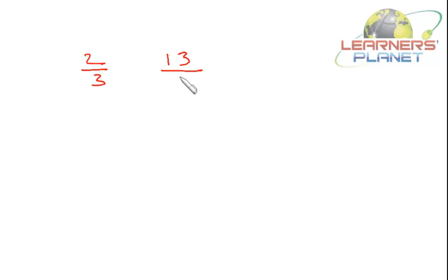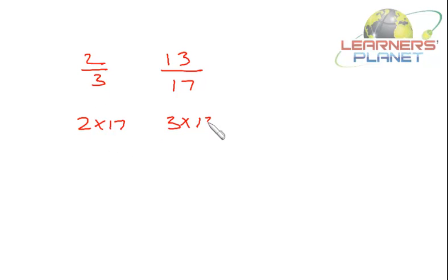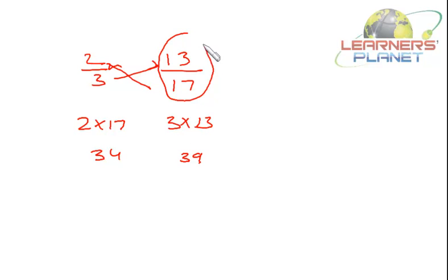Let's take one more example: 2/3 and 13/17. Cross multiply: 2 × 17 = 34, and 3 × 13 = 39. Since 39 is greater than 34, 13/17 will be greater than 2/3.